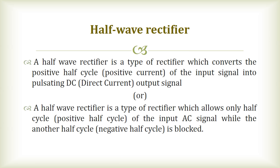What do you mean by half wave rectifier? The positive half cycle of the AC input signal is converted into a pulsating DC output signal. The remaining half signal of the negative cycle is blocked or lost.